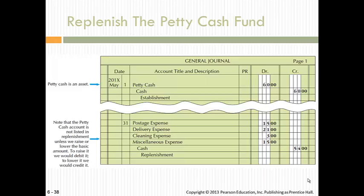Here's an example of what the journal looks like: the original petty cash was established, then expenses were incurred and petty cash needs to be replenished. A check is written for cash, someone goes and cashes it, and puts the money back in the box. The only time you ever debit petty cash is to increase it, or you credit it to decrease your petty cash fund.